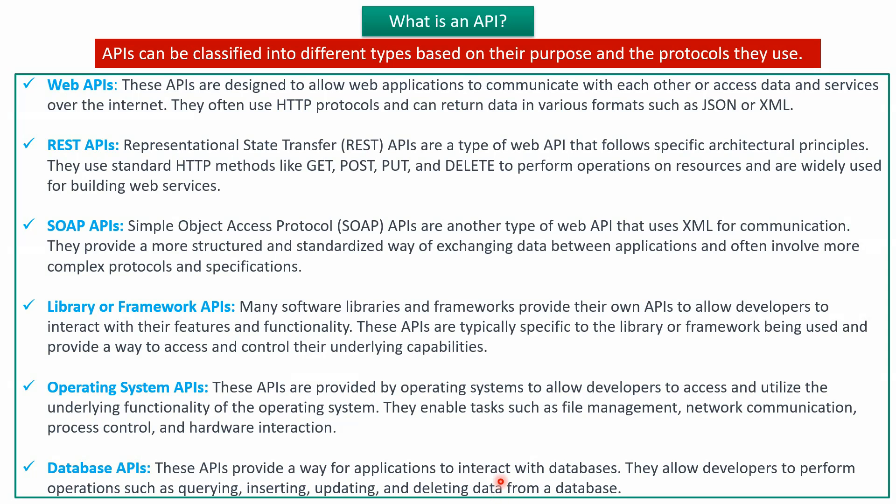The sixth one is Database APIs. These APIs provide a way for applications to interact with databases. They allow developers to perform operations such as querying, inserting, updating, and editing data from the database.